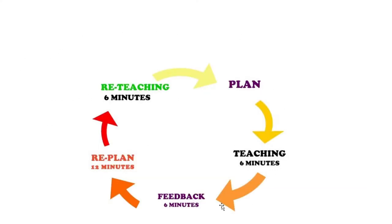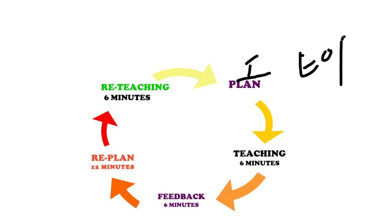The cycle of micro teaching is: Plan, Teaching, Feedback, Re-Plan, and Re-Teaching. Plan means selection of a topic — one topic is selected. Teaching means based on the small topic, the teacher trainee will teach the lesson. The duration is six minutes.